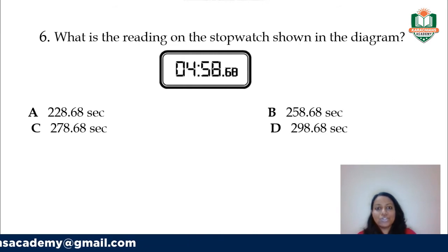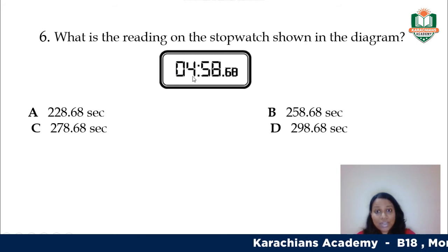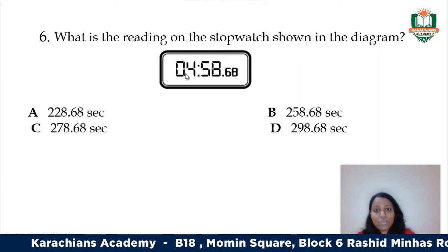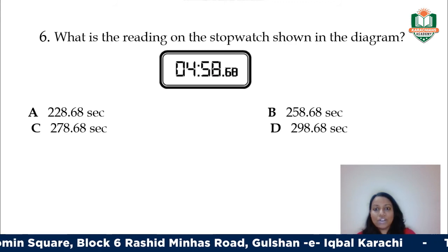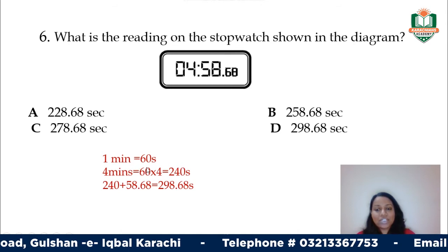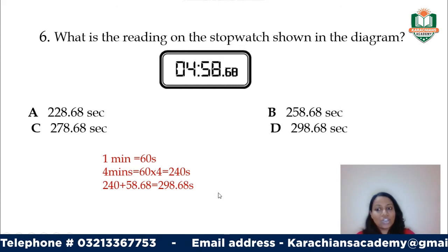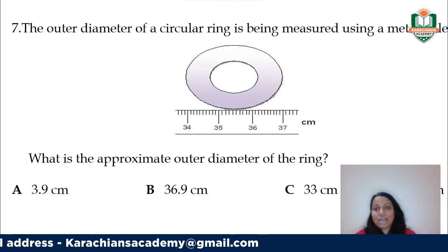Next, what is the reading of the stopwatch shown? The answers are given in seconds only, so you must convert completely. You have minutes, seconds, and hundredths of a second. It reads 4 minutes 58.68 seconds. Convert minutes: 4 times 60 equals 240 seconds. Add 58.68 to get the total, which is your answer — option D.